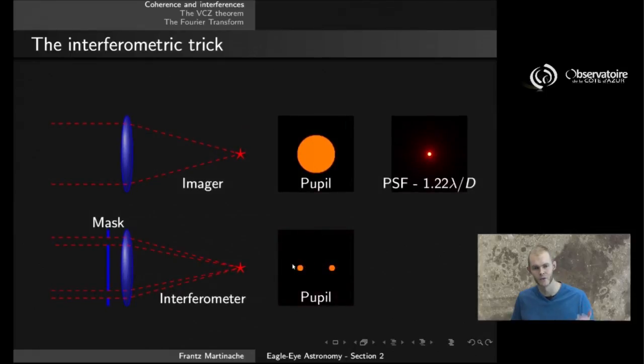And with this system, the pupil is going to look very different than in the previous case. Instead of the large circular aperture, we now have two small circular apertures, separated by a distance that is comparable to the original diameter. It's a little bit smaller, simply because the holes cannot be made infinitely small.